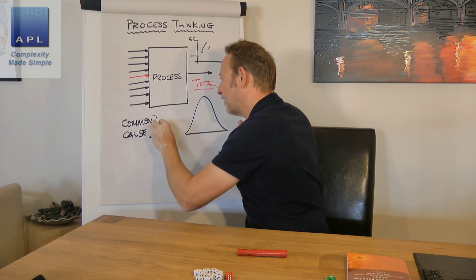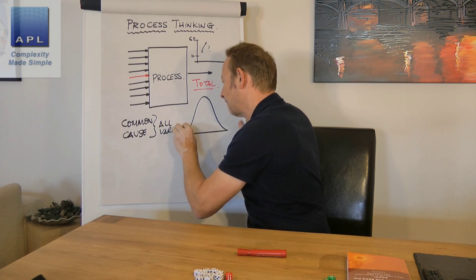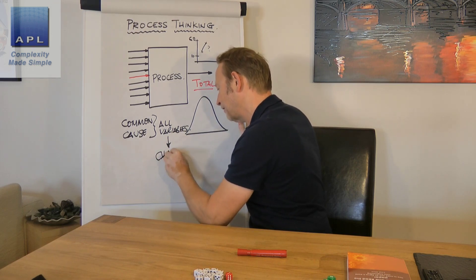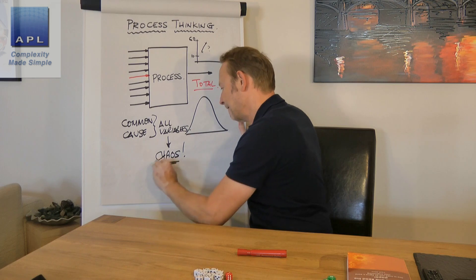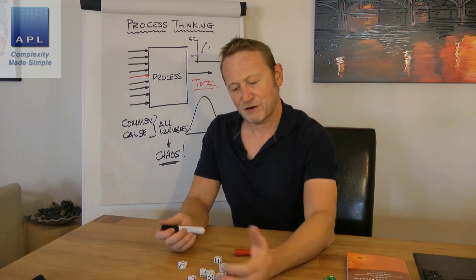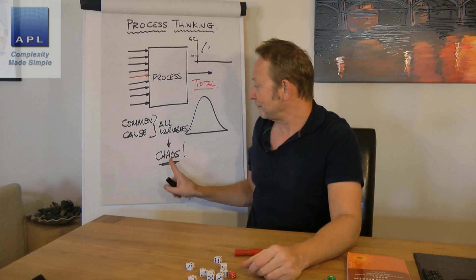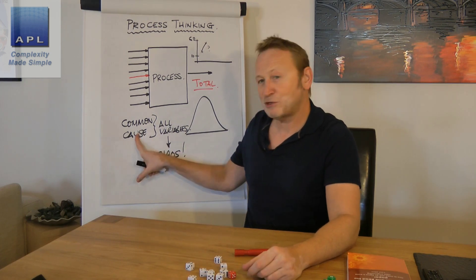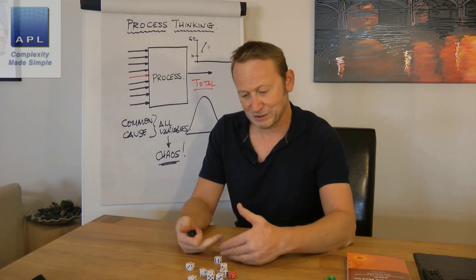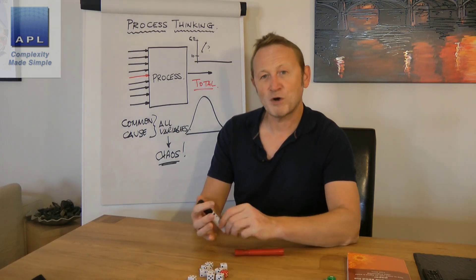Another way to think about that: all the variables are moving. If all the variables are moving, that's quite complicated. If I keep rolling these dice, they move in a random pattern — and another word for a random pattern is chaos. When you have common cause movements in your process, there is no root cause. This is multi-causal.